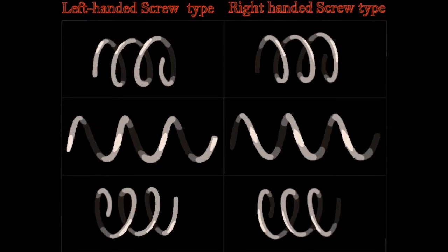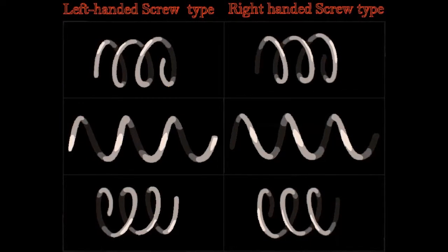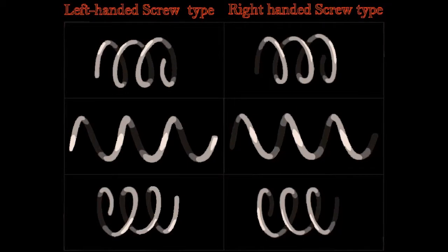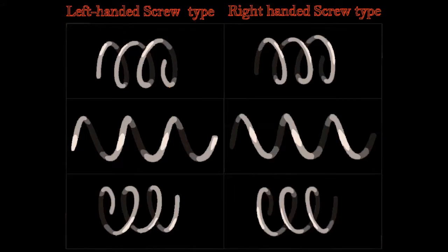Handedness, or chirality, is a property of the helix, not of the perspective. A right-handed helix cannot be turned to look like a left-handed one unless it is viewed in a mirror, and vice versa.